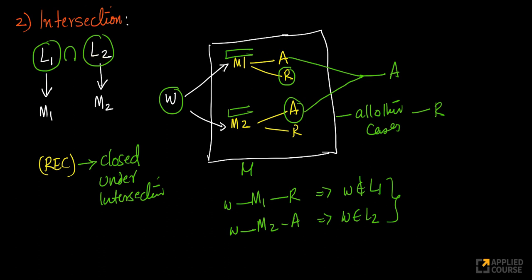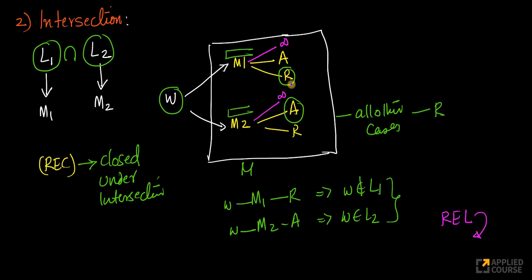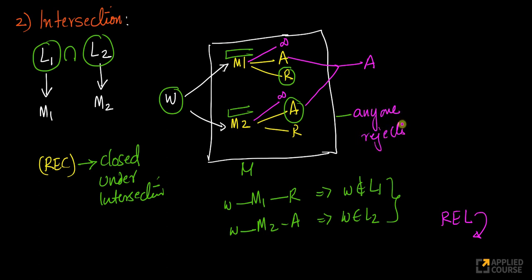What if the languages are recursively enumerable? Then the machines also have the infinite loop case. For recursively enumerable languages: only if both machines accept will I accept; if any one of them rejects, I reject; if both go into an infinite loop, I get into an infinite loop.